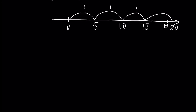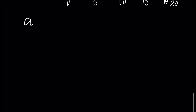Next, let's talk about the operation of rising a number to a power. If we have some number a raised to a power n, then n is called the exponent, a is called the base, and if we assume the result is b, then b is called the power.